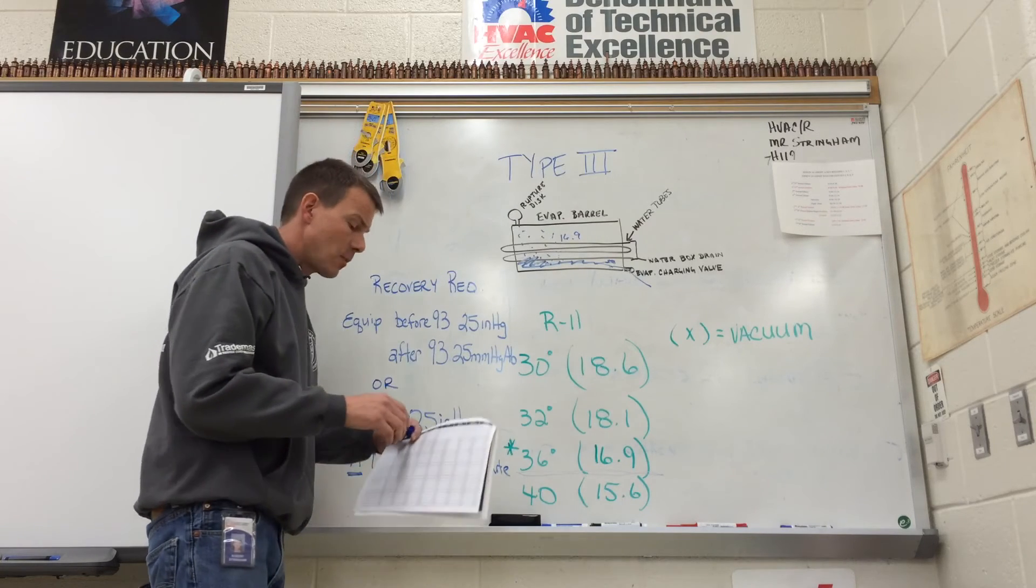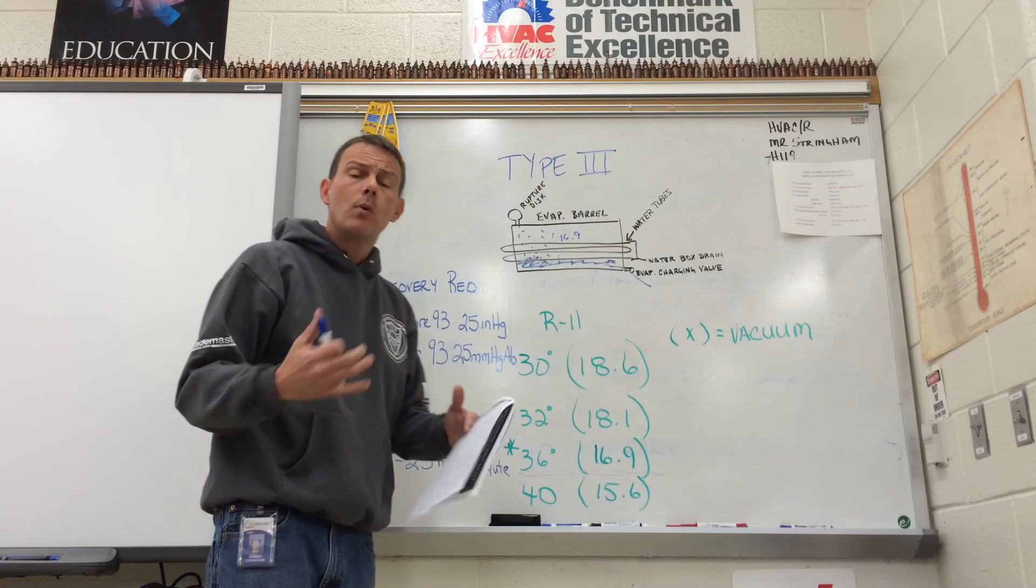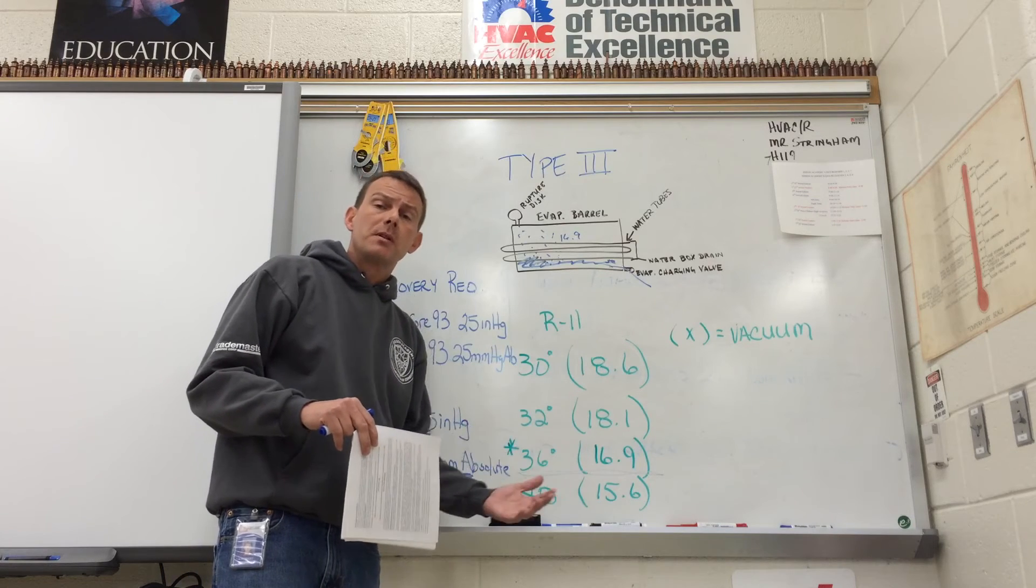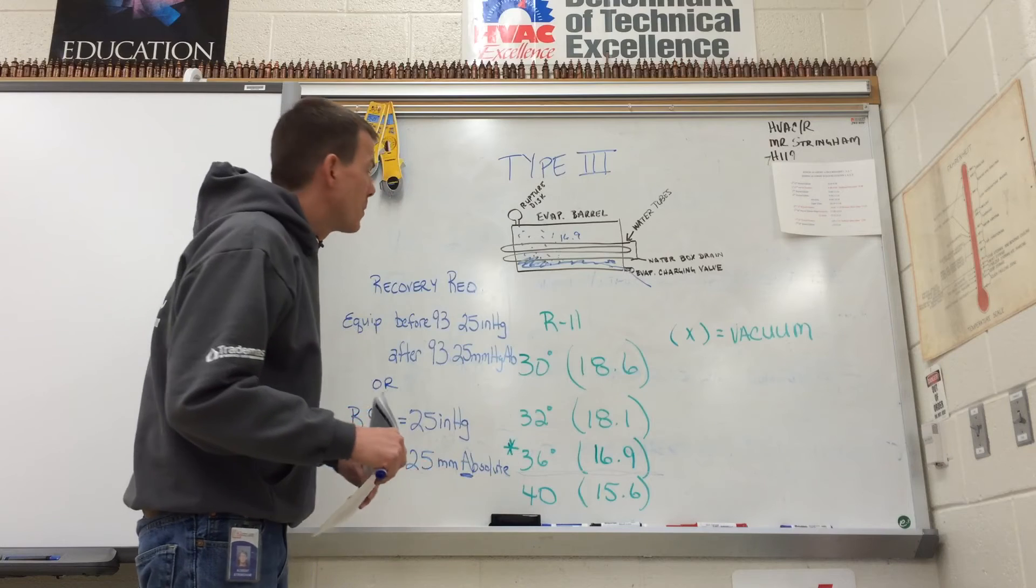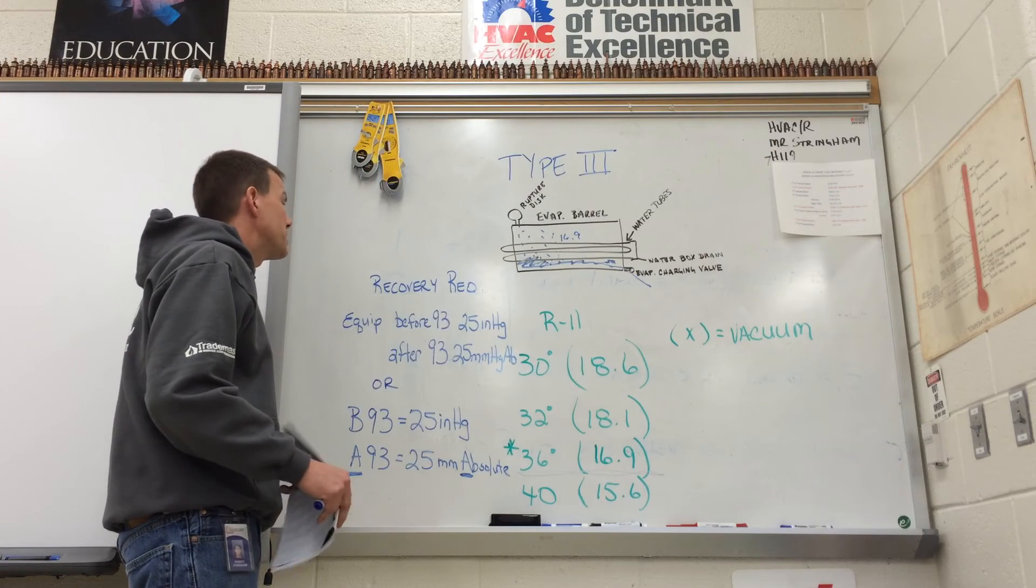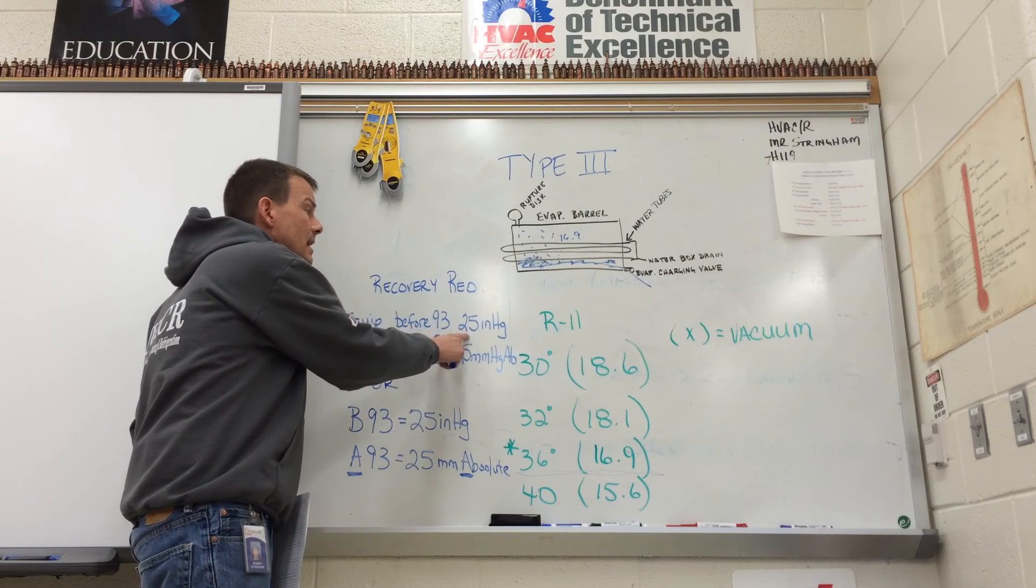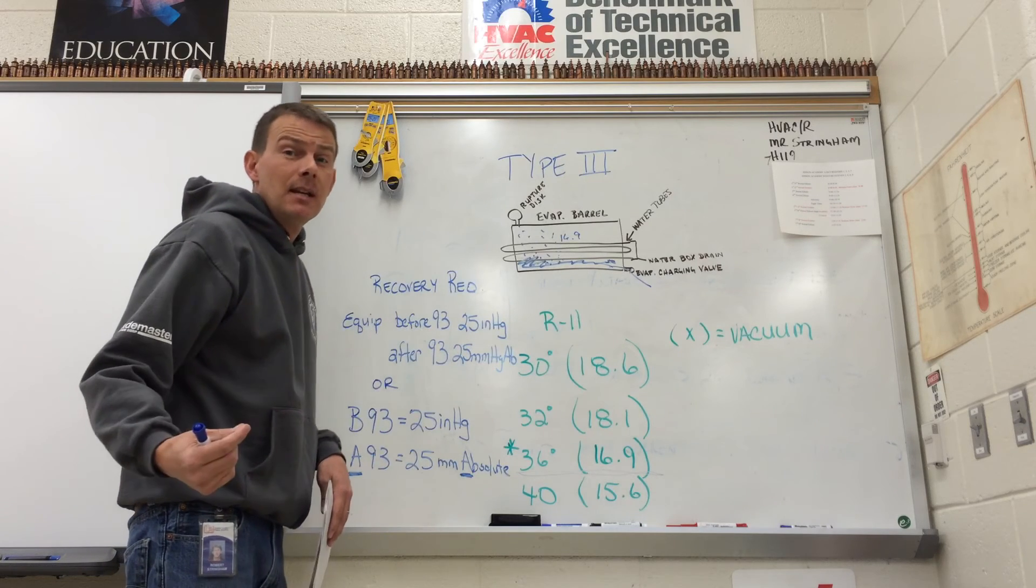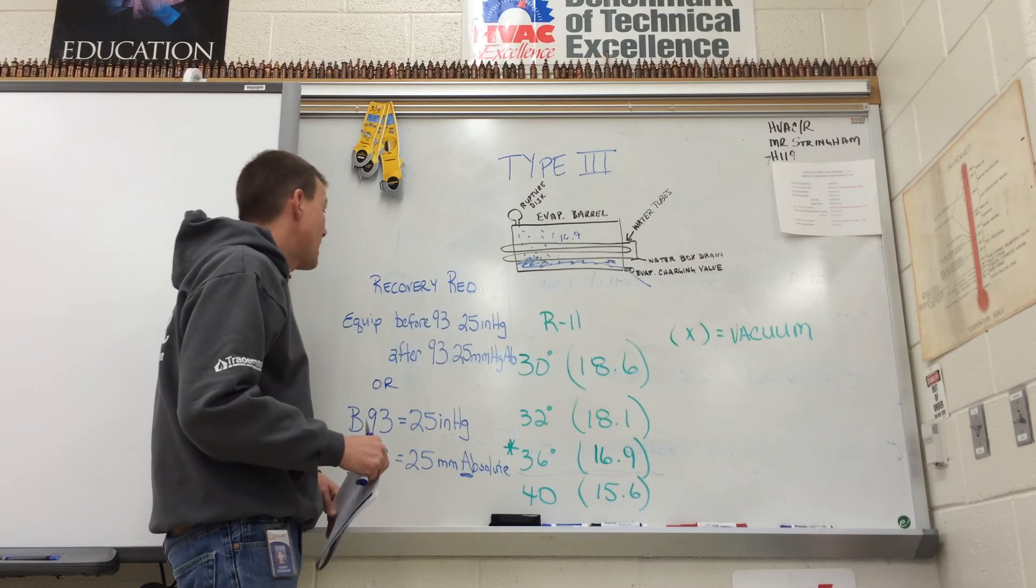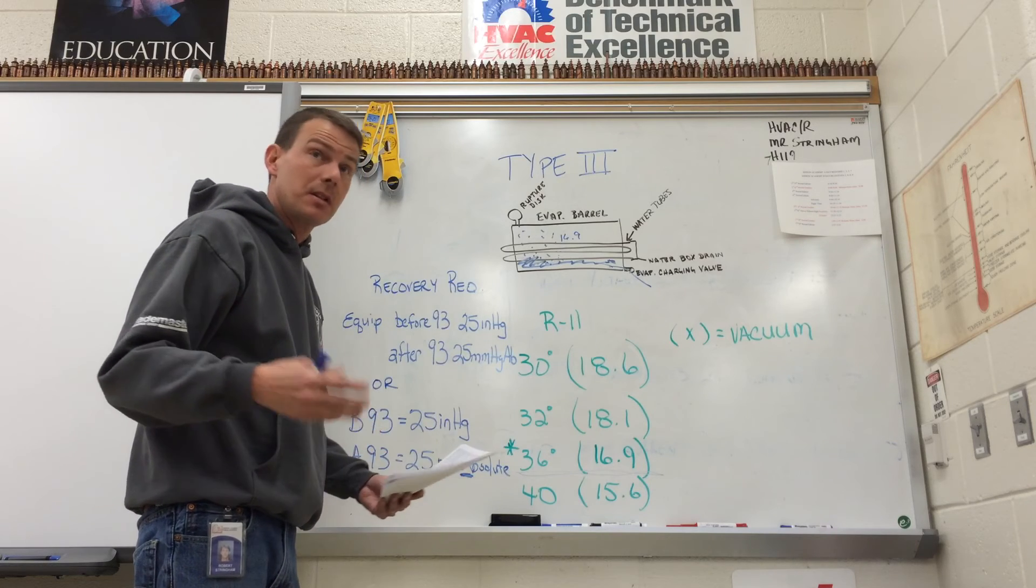Another thing that we use is the vacuum requirements, like it's ABC for type 1, and then it's 0444, 010, 1015 for type 2. The way to remember the recovery requirements for a type 3 appliance is equipment that was manufactured before 1993 has got to get down to 25 inches in mercury. And that kind of rhymes, so I tell people to remember that. Before 93, 25 inches in mercury.